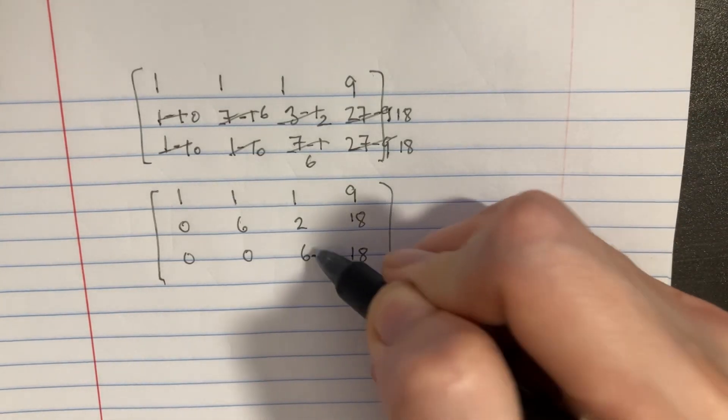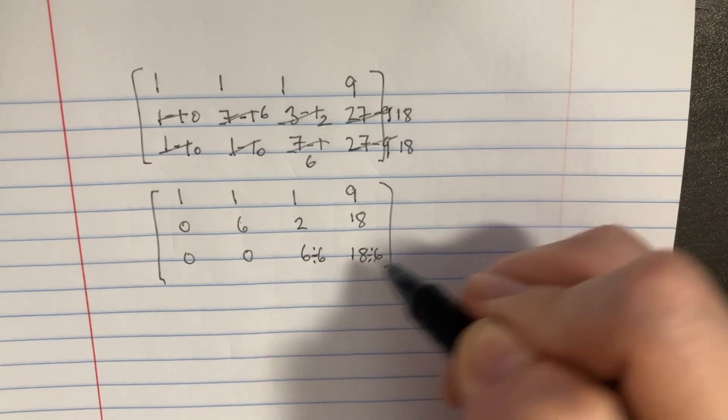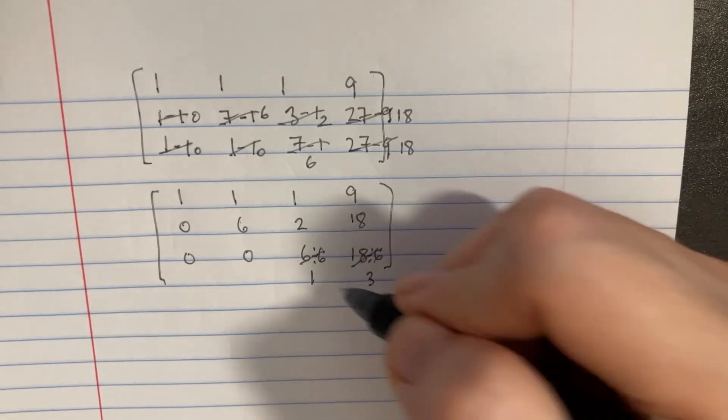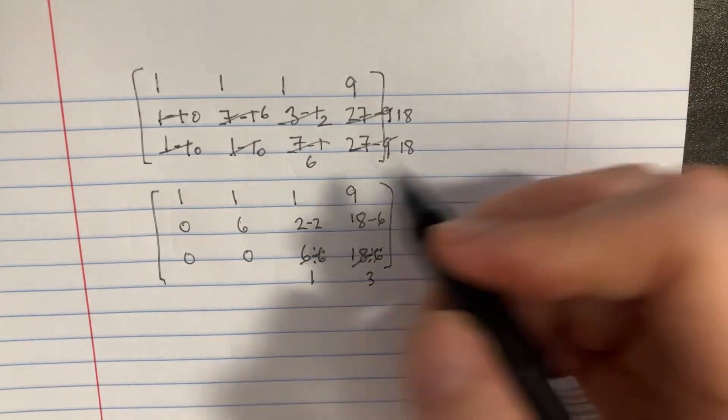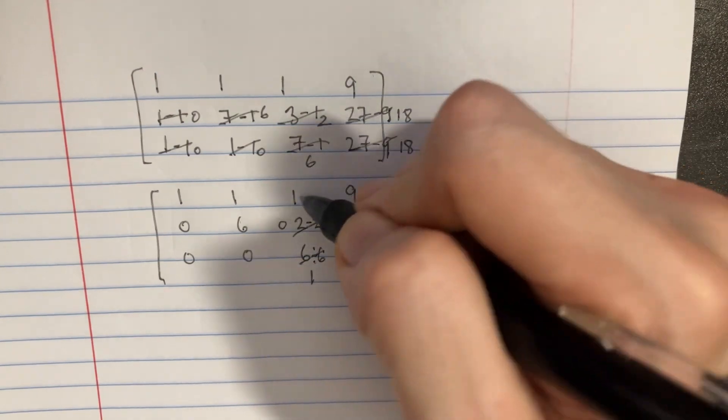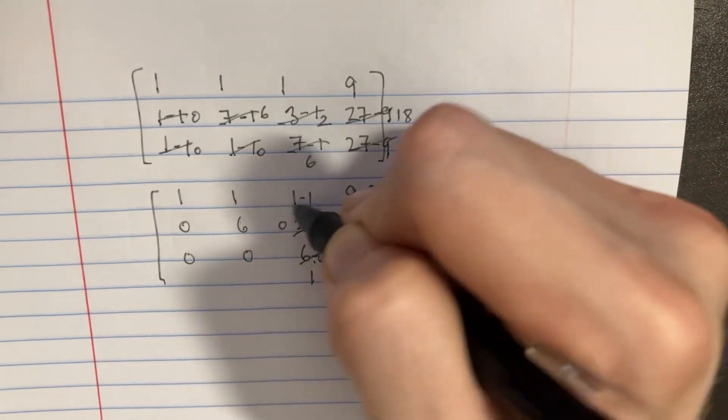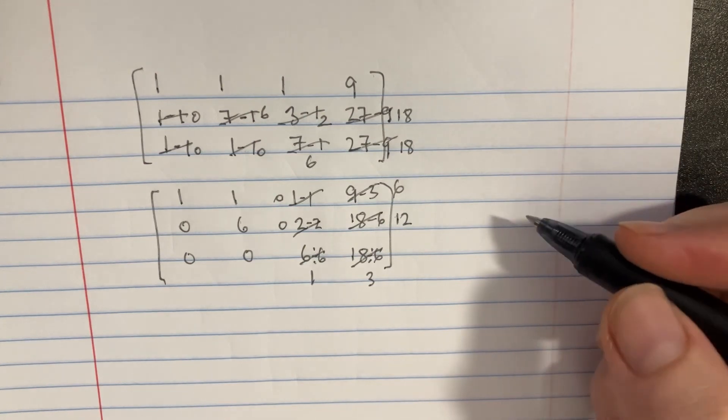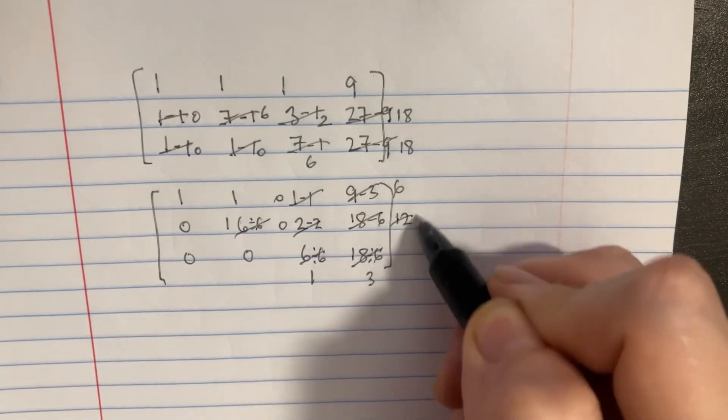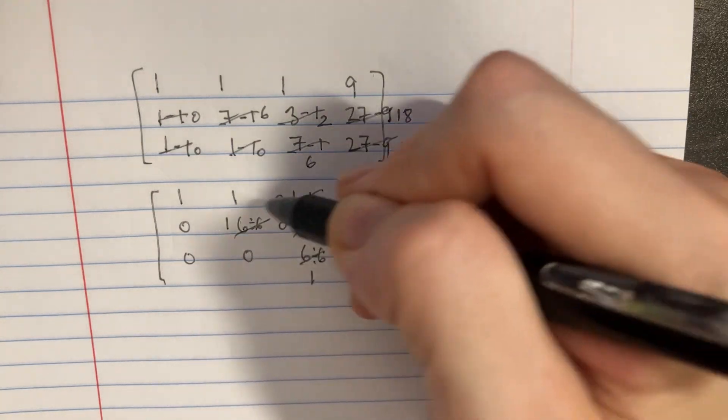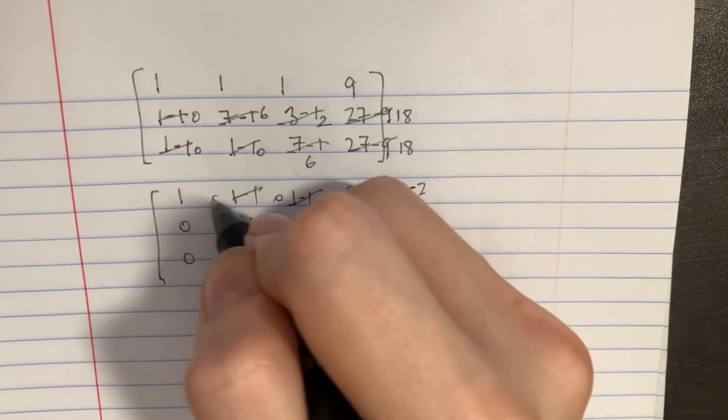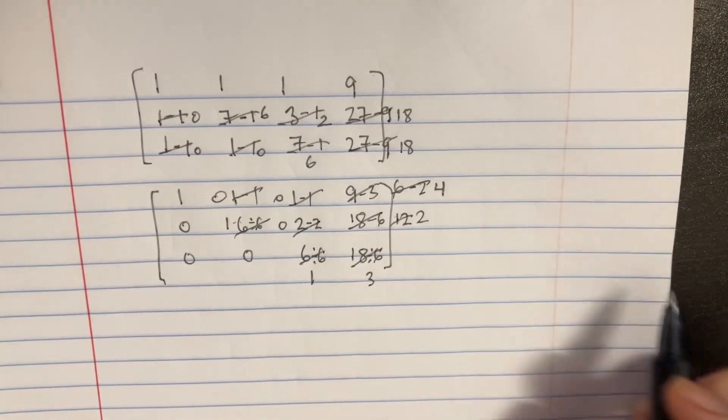Now we can see that we can just divide this row by 6, and that will just give us 1 and a 3 here. Then we could subtract the 2 from there and 6 from there, giving us 0 and 12. And then we could subtract 1 and 3 to get 0 and 6. And then we can divide this row by 6, giving us a 1 here and a 2 here. Subtract the 1 from this row here, and here, subtract 2. So then that will be the end, and we've got our final answers here.